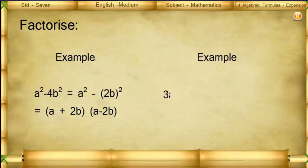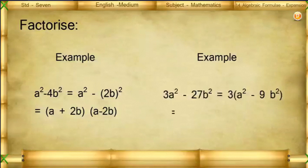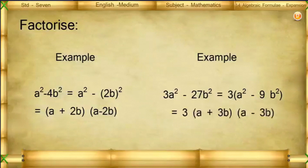Example: 3a² − 27b² = 3(a² − 9b²) = 3(a + 3b)(a − 3b).